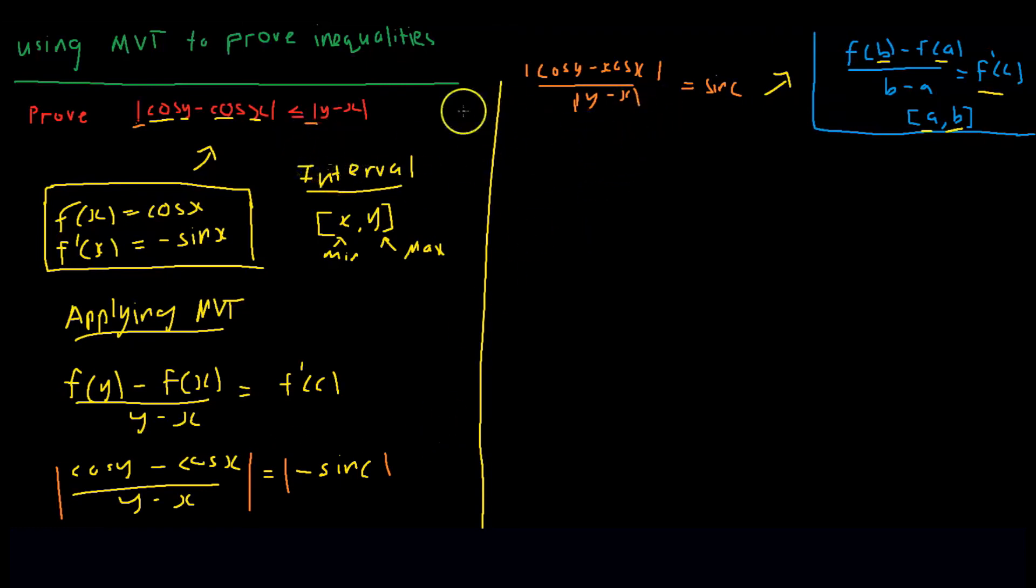As we can see from the question, the y minus x is on the right hand side. To get this on the right hand side, we'd have to make sin of c equal to 1. And how would we do this? We'd set up an inequality with sin c. So bringing sin c over here, we have sin c, as we know, is between negative 1 and 1. Hence, we could just take sin c is less than or equal to 1.